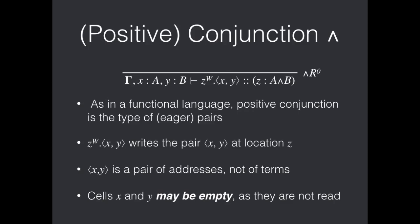So as we might expect, a process that provides or writes to the destination Z of type A and B writes a pair into that location. And here it writes the pair X, Y. And X and Y are these addresses that we're entitled to use on the left. Now, importantly, these are not a pair of terms. It's a pair of addresses. You can think of this as, for instance, writing pointers into memory rather than writing the value stored at those pointers.